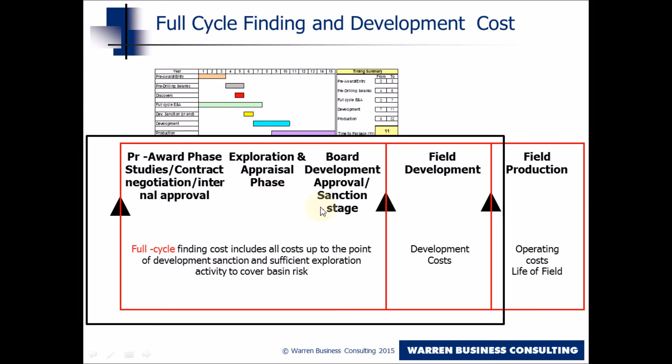Even the pre-development studies that you do — investigating options for how you might develop the field — all come into F&D, because only when you've made the development decision and started to develop the field with its appropriate development programme, it's when the field gets into production, that's when you know what the full cycle exploration and production costs — full cycle finding and development costs — are going to be.